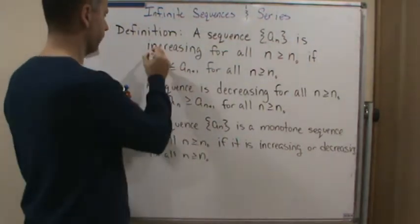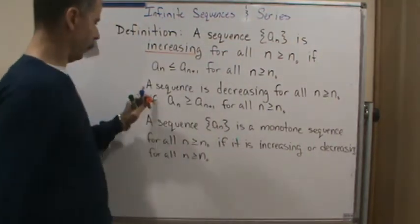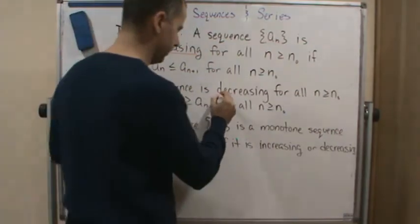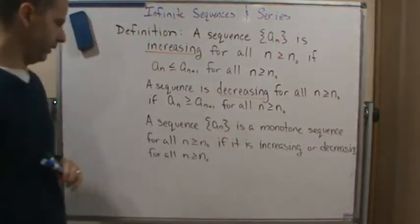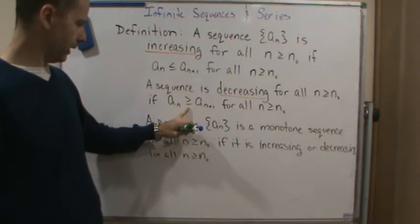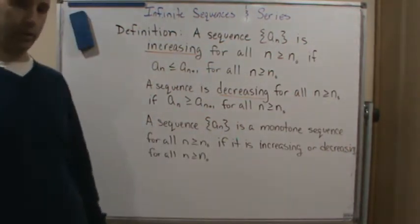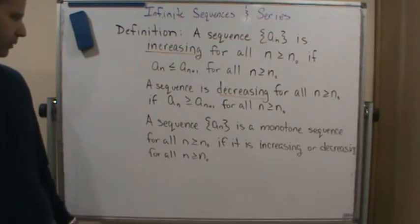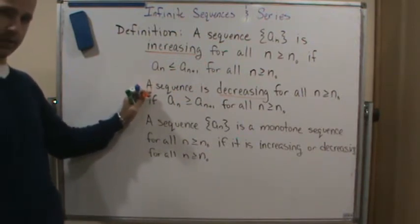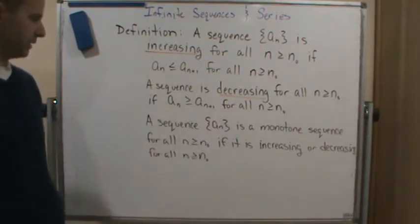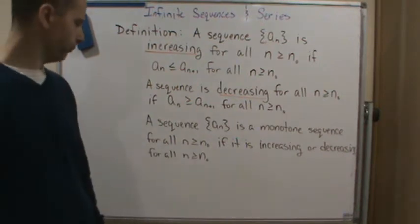And then of course, a sequence is decreasing for all n greater than or equal to n naught if a sub n is greater than or equal to a sub n plus 1 for all n greater than or equal to n naught. So again this goes back to the definition of decreasing or eventually decreasing that we talked about as well.